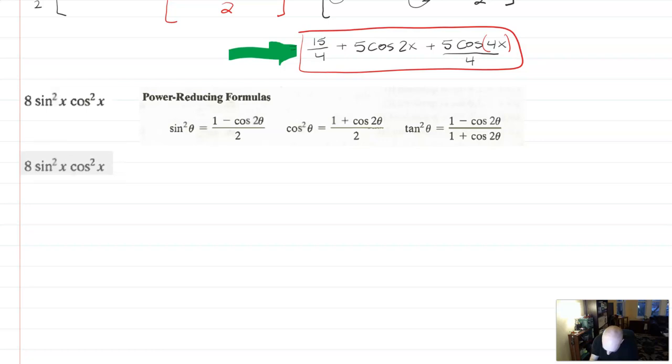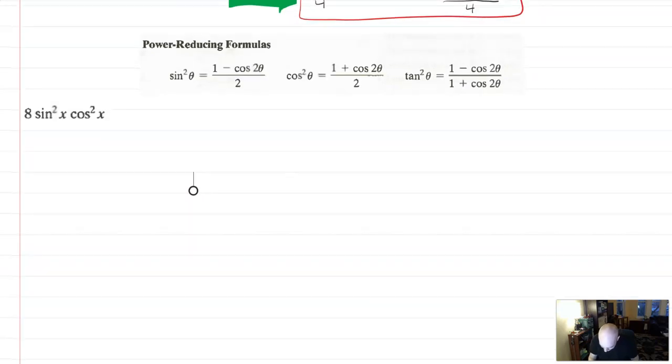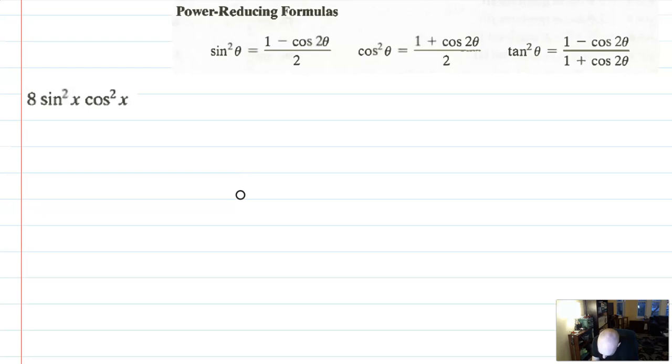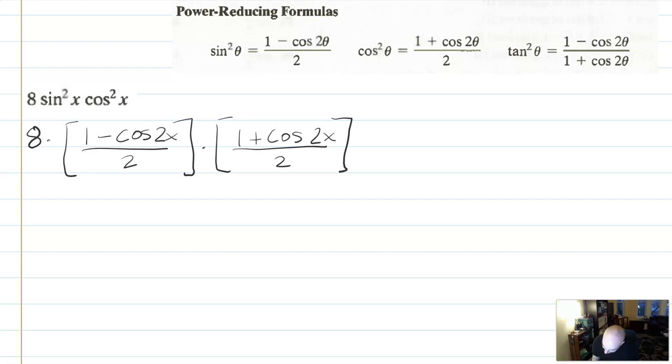Let's do another one. So I have 8 sine squared x cosine squared x. So the 8 is just going to hang out in the front like a constant. But sine squared x I need to write as 1 minus cosine of 2x over 2 and cosine squared x I need to write as 1 plus cosine of 2x over 2. So I'm substituting in using the two identities. Now I'm going to have to foil this out again. 8 times 2 times 2 is 4.